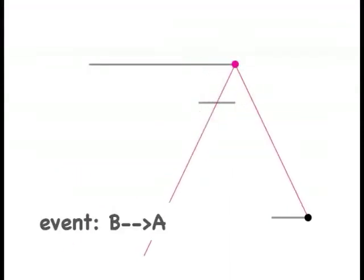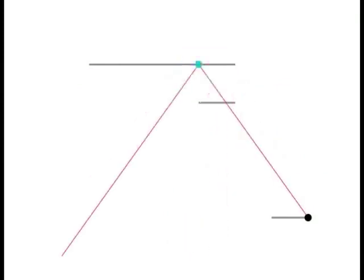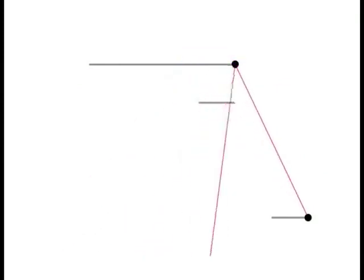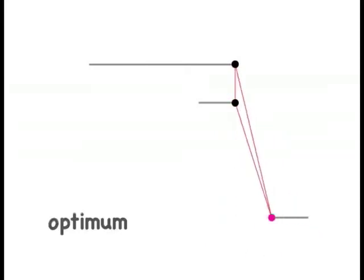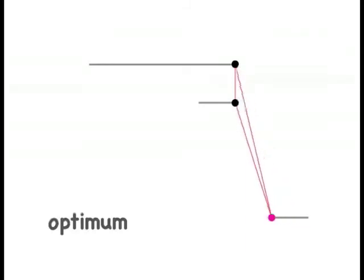The event B→A happens when a sliding point is caught at the end of the segment it is sliding along. By keeping all points in a valid position during the process, we are guaranteed to find an optimum.